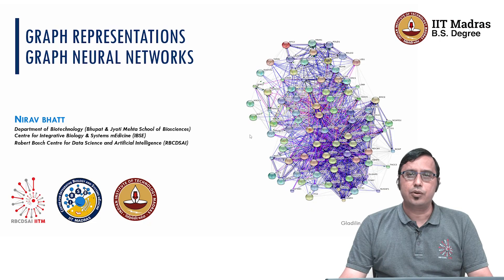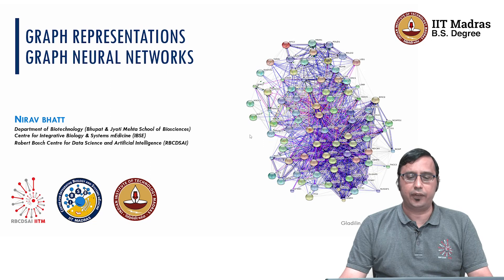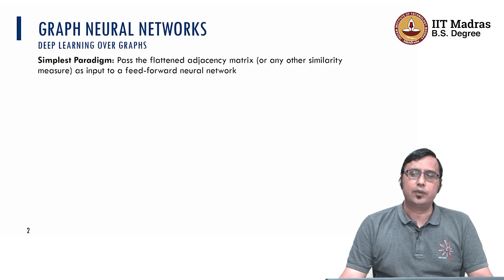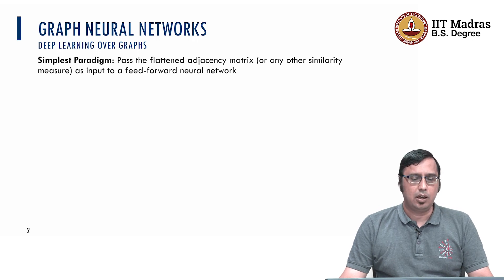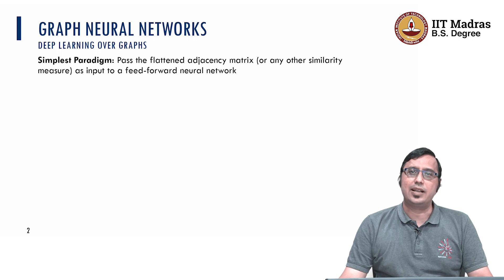Hello friends, today we are going to discuss another approach to represent graphs called graph neural networks. So far, we have looked at node embedding and edge embedding using shallow embedding techniques. Now, what we are trying to do here is to use not only the adjacency matrix but also certain properties of nodes or edges to learn graph representation.